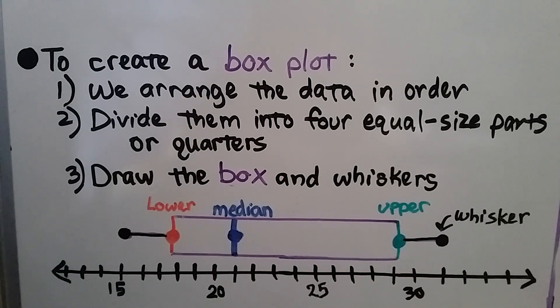To create a box plot, the first thing we do is arrange the data in order, then we divide them into four equal-sized parts, or quarters, and at last, we draw the box and whiskers. So here we have the box, and here we have whiskers on the side.